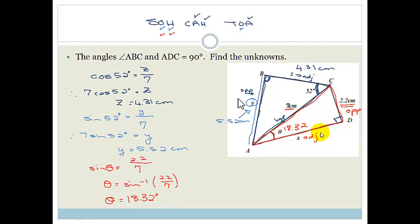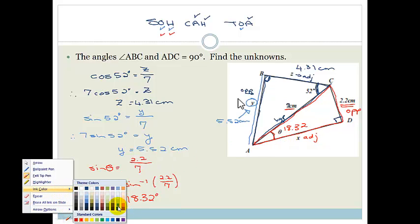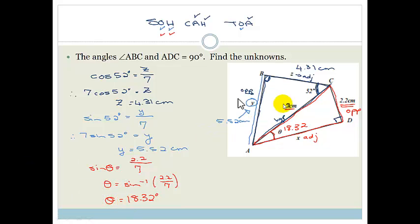Now we want the last unknown which is X. So again I'm just going to change my colors. So we want X. So again what we could do is we could use Pythagoras. But because this is a trig presentation I'm going to still use our trig. So do you agree we've been given the hypotenuse and we've been given the opposite. And we want the adjacent. So it really doesn't matter which one we use. Since we used sine last, let's see what we haven't used. We haven't used tan. So let's use tan.